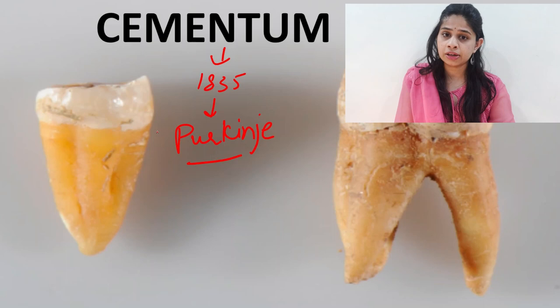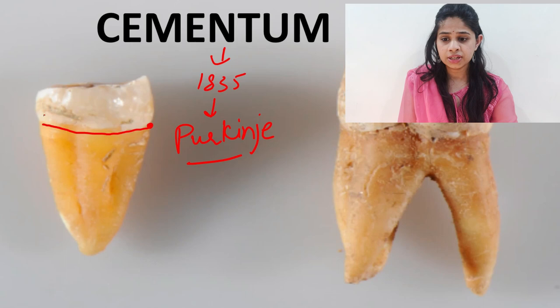It starts at the cervical region at the CEJ — the cemento-enamel junction — which is present between the enamel and the cementum. There are various types of cemento-enamel junctions and we'll be talking about those a bit later.